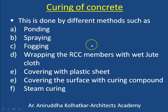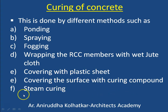So how is this curing done? The curing of concrete is done by different methods. The first method is called ponding, the second is spraying, then next is fogging, next is wrapping the RCC member with wet jute cloth, then covering with a plastic sheet, covering the surface with a curing compound, and the last is steam curing. In all these methods, the central theme is that you have to prevent evaporative loss — either by keeping water continuously present on the surface of the concrete, or to prevent the water from escaping out.